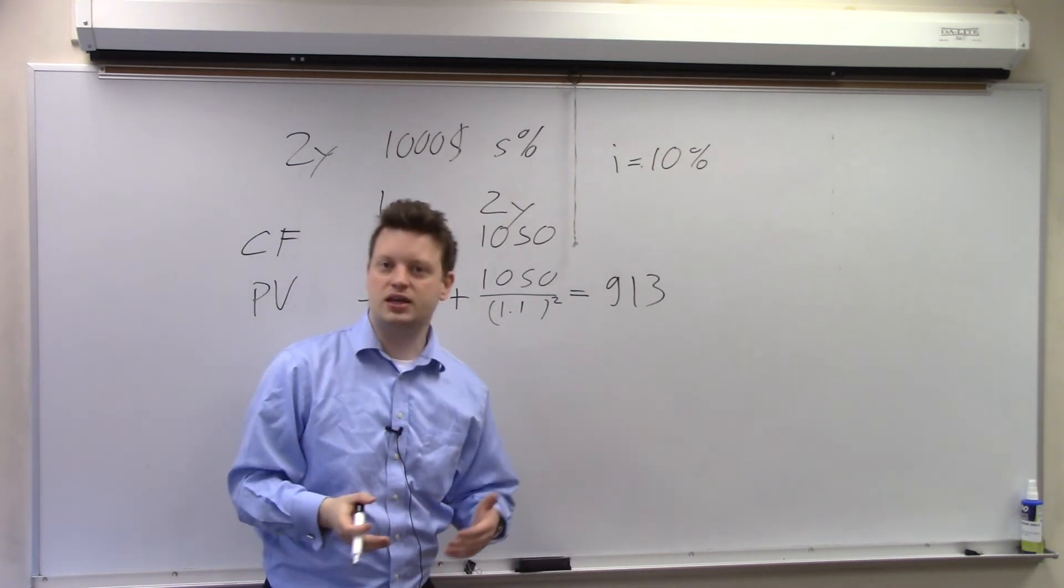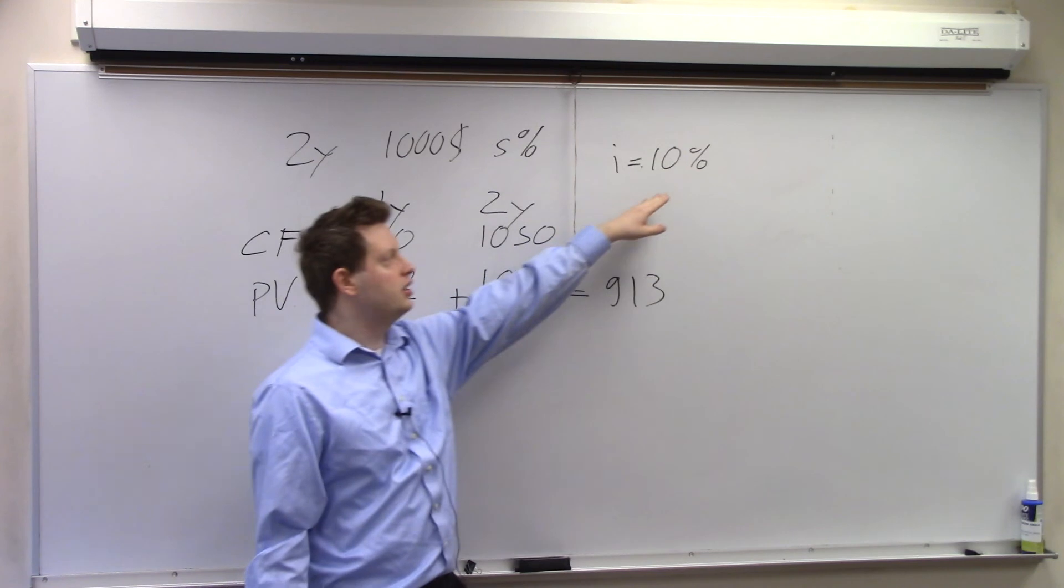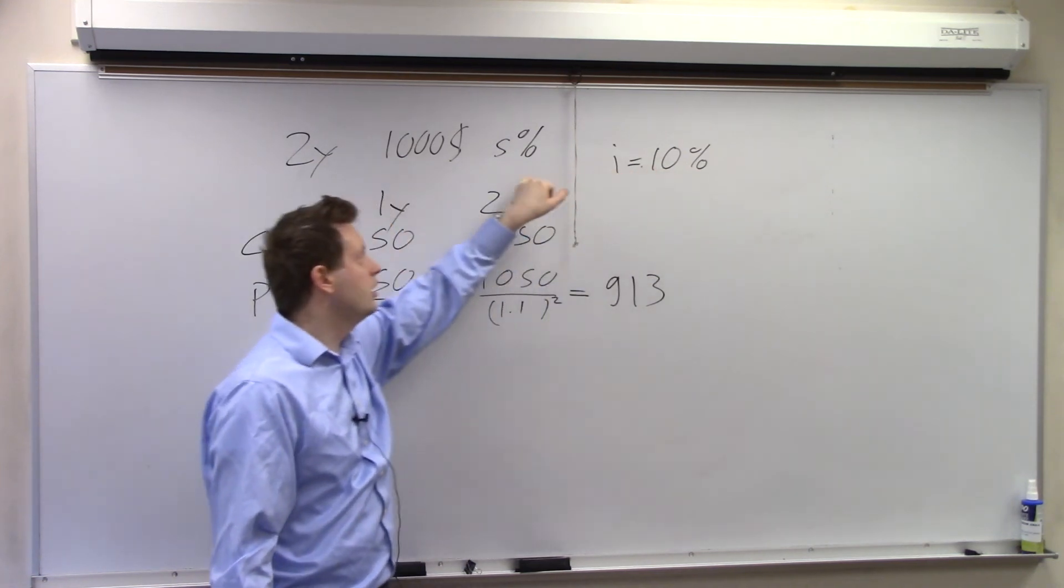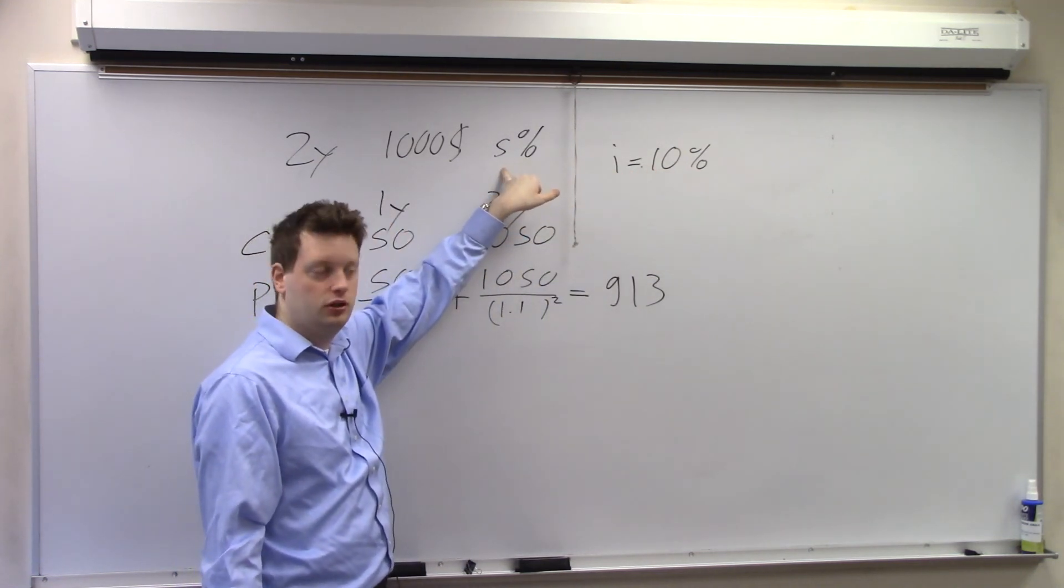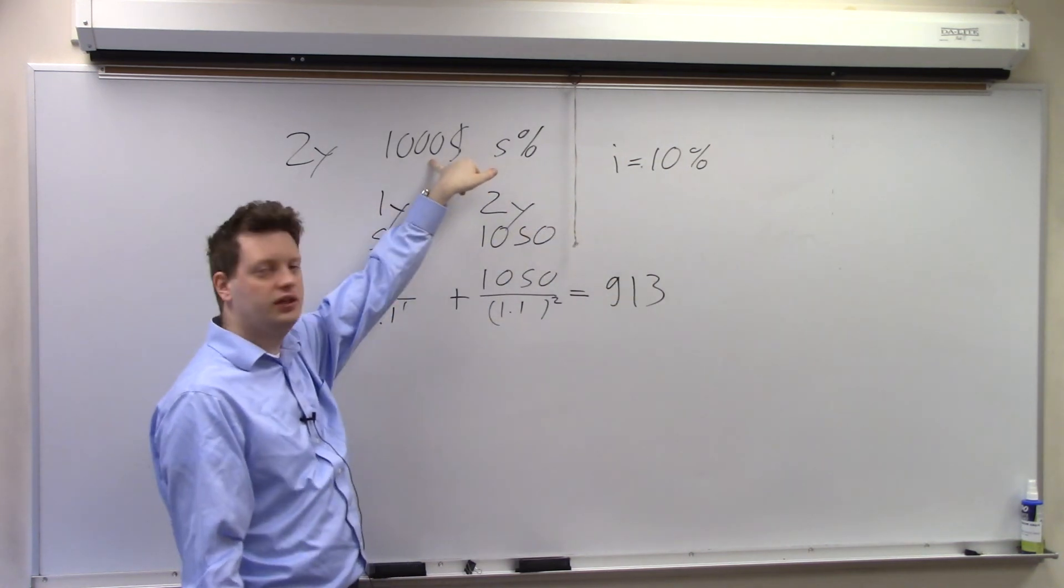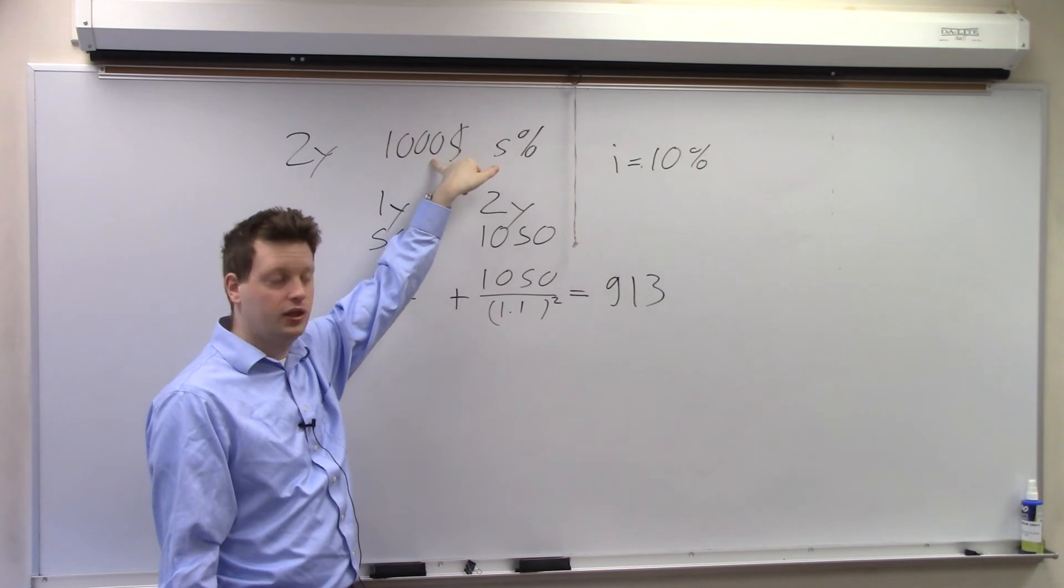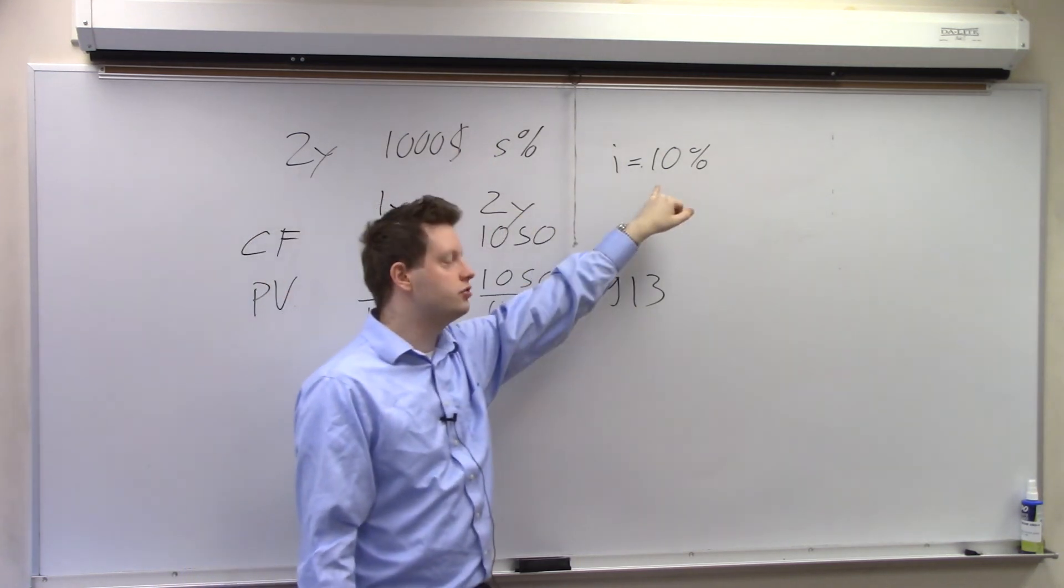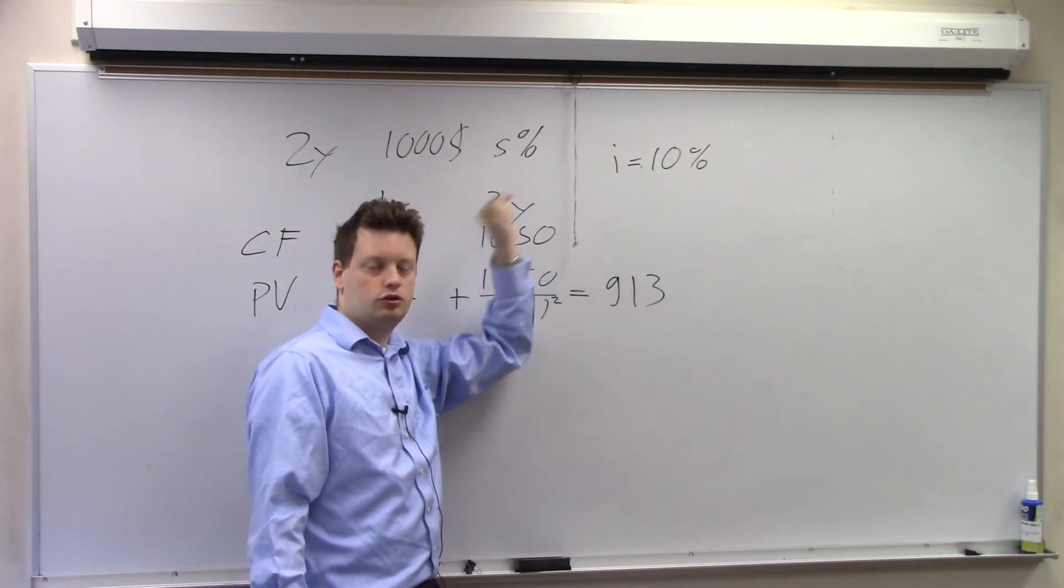So I can see that if the market interest rate is higher than the coupon rate of the bond, the price of the bond will be lower than the principal of this bond. The reverse will be true if the interest rate is lower than the coupon payment.